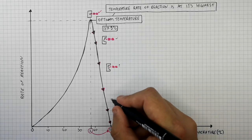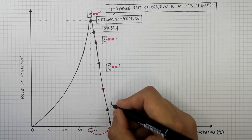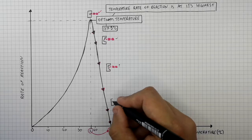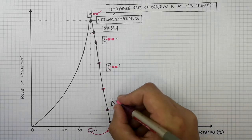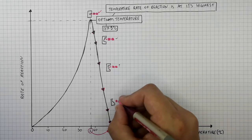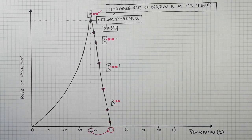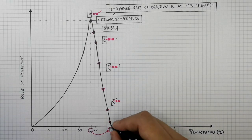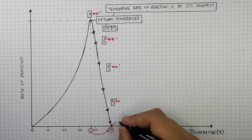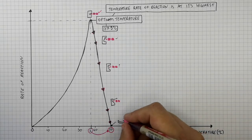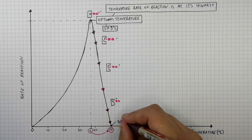As you increase the temperature even more, the enzyme's active site will denature even more — it changes shape even more — so the substrate can no longer bind the active site of the enzyme. At this point, there is a rate of reaction of zero because the enzyme has completely denatured, and the substrate cannot bind the active site at all.